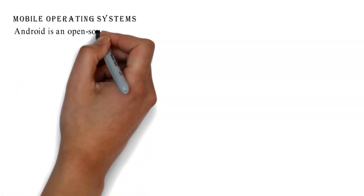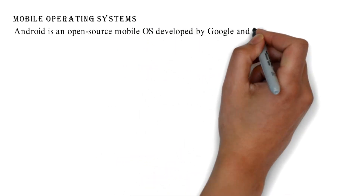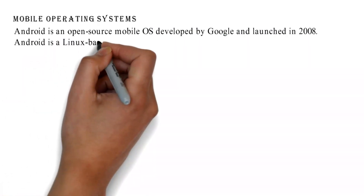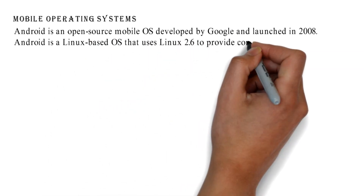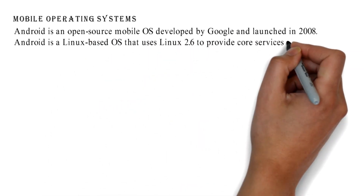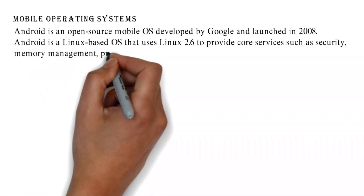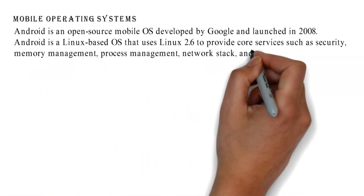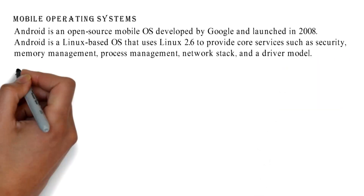Android is an open source mobile OS developed by Google and launched in 2008. Android is a Linux-based OS that uses Linux 2.6 to provide core services such as security, memory management, process management, network stack, and a driver model.